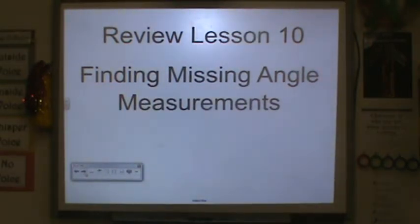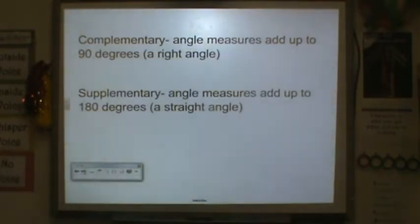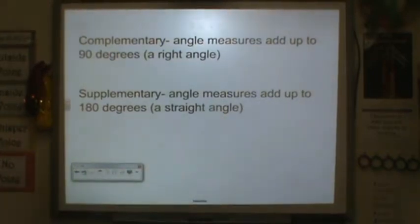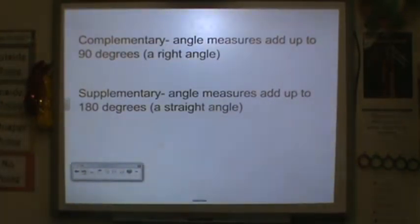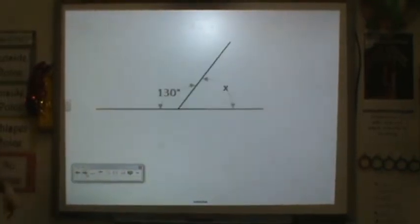This is Review Lesson 10, Finding Missing Angle Measurements. Go ahead and write these definitions down. A complementary angle are angles that measure up to 90 degrees, or a right angle. Supplementary angles are angle measures that add up to 180 degrees, or a straight angle.